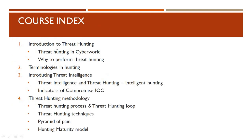Let's quickly look at the course index. Starting with the introduction to threat hunting — what is threat hunting in the cyber world, the ways to perform it, and why to perform it. Then we'll look at terminologies in threat hunting, then threat intelligence combined with threat hunting to give you intelligent hunting, which is a very important phase. We'll also look at indicators of compromise, the threat hunting methodology, technologies and processes used, important processes in threat hunting, and a threat hunting loop.